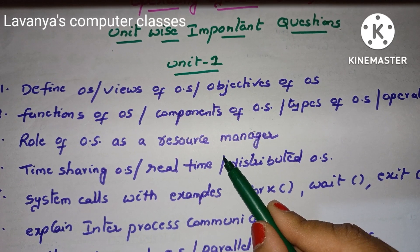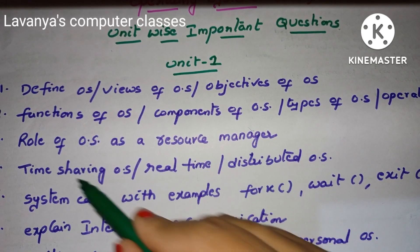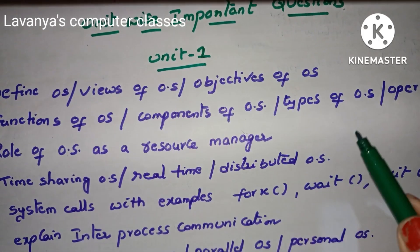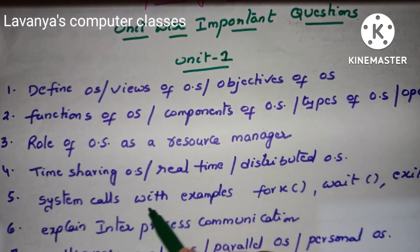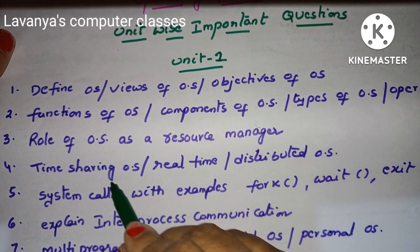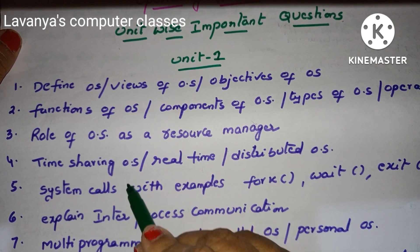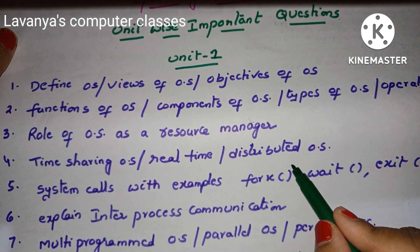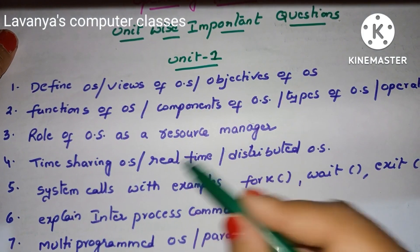OS is working as a resource manager, process manager, and so on. They are explaining roles not only as resource manager but any manager — process manager and like operations. Next, types of operating system — that is a deep explanation. Explain about time sharing operating system, real time operating system, or distributed operating system. If you read the first and second questions, these questions are repeated.